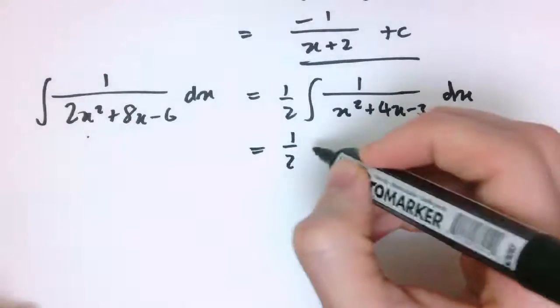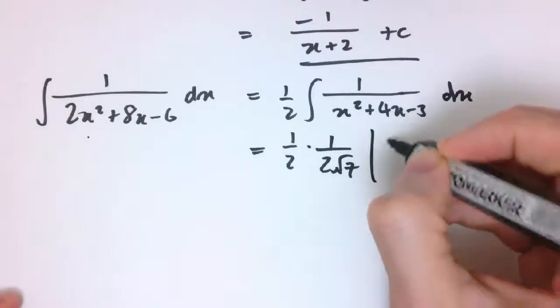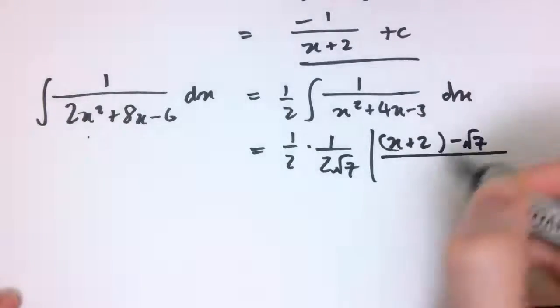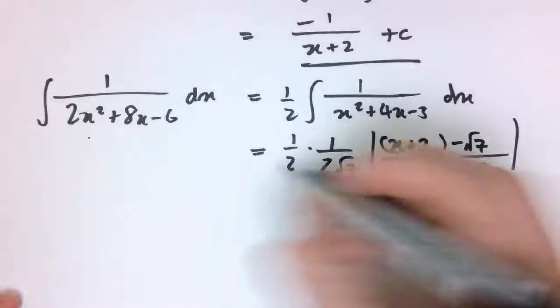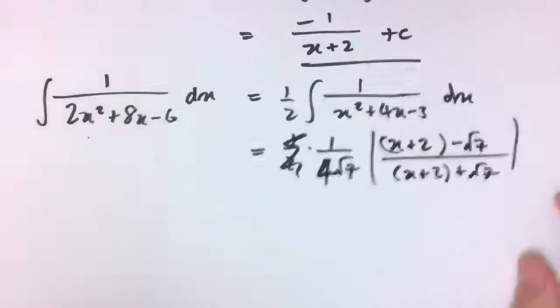To do the 1 over x squared plus 4x minus 3 dx, in fact, it is exactly the same integral that we did earlier, so I'll just write down that's a half times 1 over 2 root 7, mod x plus 2 minus root 7 over x plus 2 plus root 7, and perhaps I'll simplify this into 1 over 4 root 7.